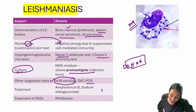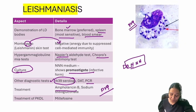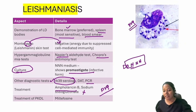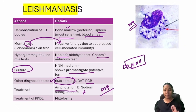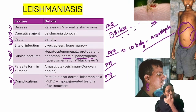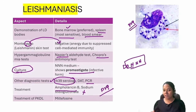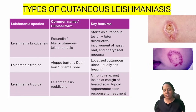Very important PYQ: the drug of choice is amphotericin B — do not write sodium stibogluconate. Sodium stibogluconate is used only if amphotericin B is unavailable. The treatment for post-kala-azar dermal leishmaniasis is miltefosine. These two tables cover everything about leishmaniasis, and a definitive question comes from them every year.